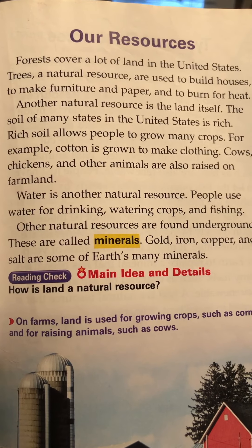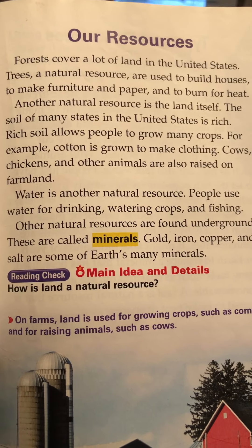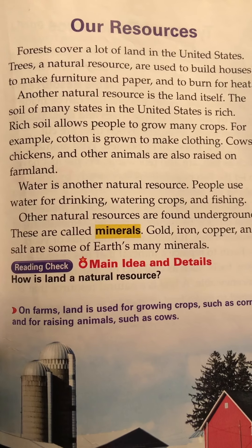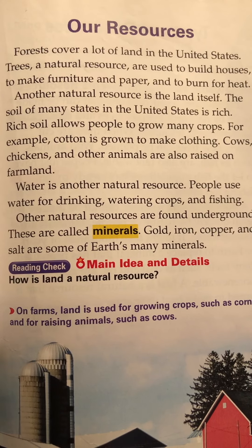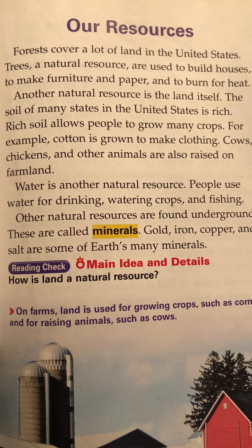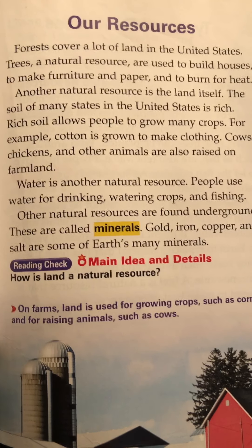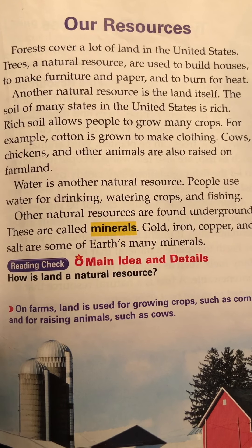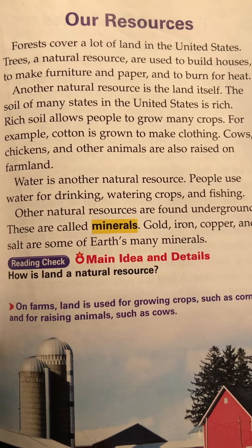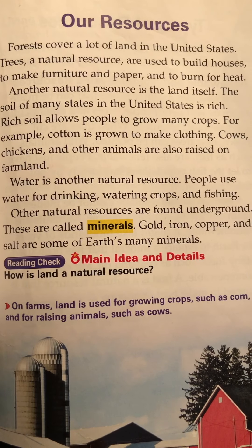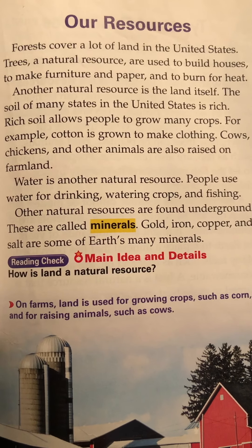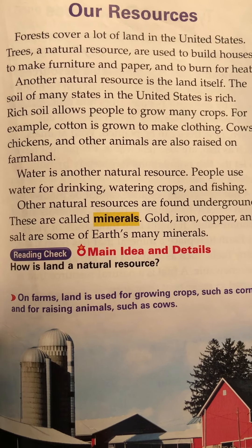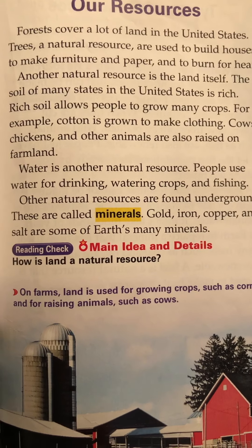Another natural resource is the land itself. The soil of many states in the United States is rich. Rich soil allows people to grow many crops. For example, cotton is grown to make clothing. Cows, chickens, and other animals are also raised on farmland.